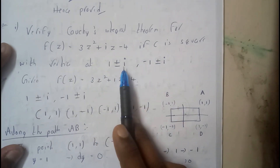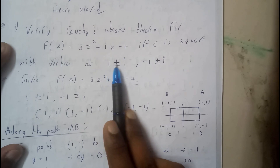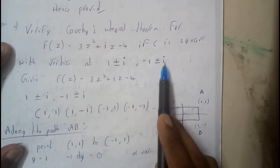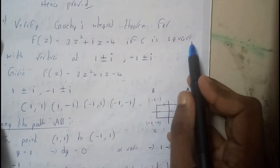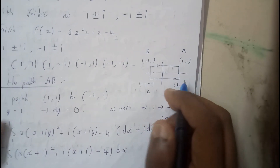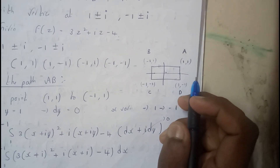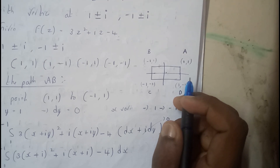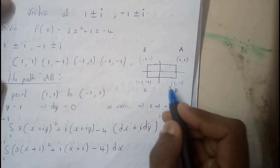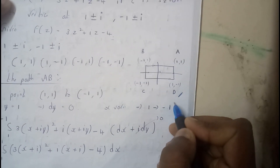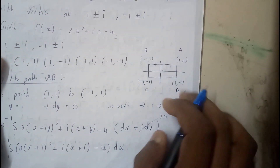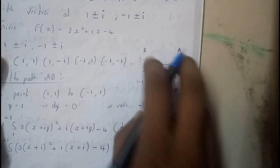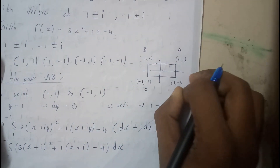The four vertices are 1+i, 1−i, −1−i, and −1+i. I've plotted these on a graph and labeled the four sides as A, B, C, and D. I'll be finding the integral values for each individual side and adding them all up.